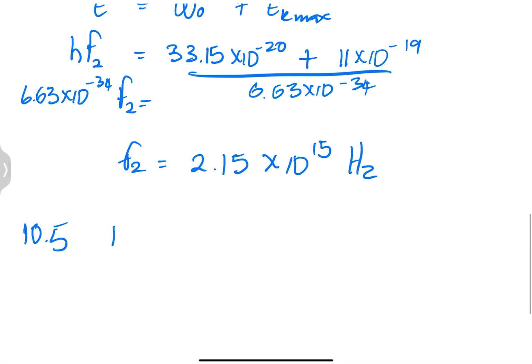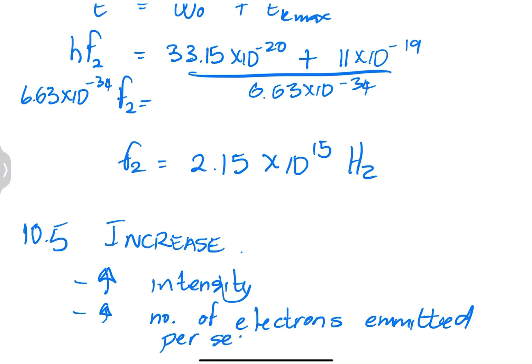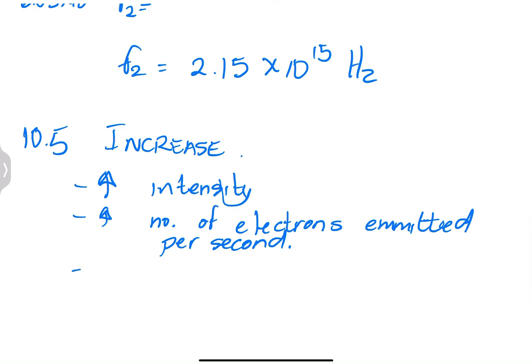And the reason for that is that, remember, once you increase intensity, you will increase the number of electrons emitted per second. So our answer for 10.5 is that it will increase. If they had asked us to explain, we would simply state that an increase in intensity, and please don't explain when you are not asked for an explanation, increase in intensity will increase the number of electrons emitted per second. Remember, it does not increase the kinetic energy of the electrons, but rather the number of electrons emitted per second. So in that case, when we increase the number of electrons emitted, remember that current is the amount of charge divided by the time, so because you've emitted more charge in this case, that will increase the amount of current that you have.